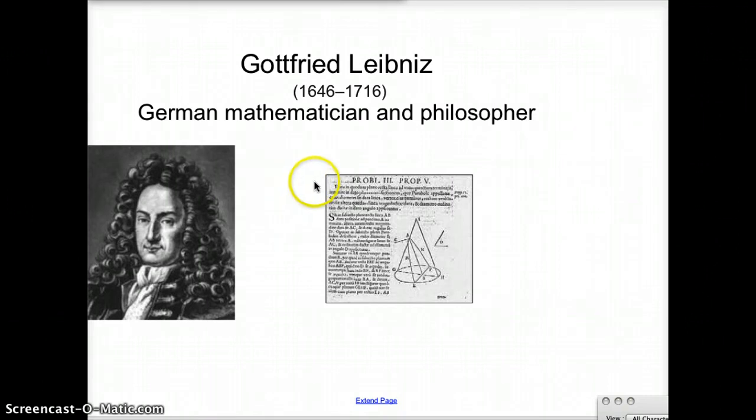And they both published their findings at different times. So the theory is that Isaac Newton figured it out first, but Gottfried Leibniz published it first. So who invented calculus? You can choose whose camp you're in. Are you in Camp Gottfried or Camp Isaac?